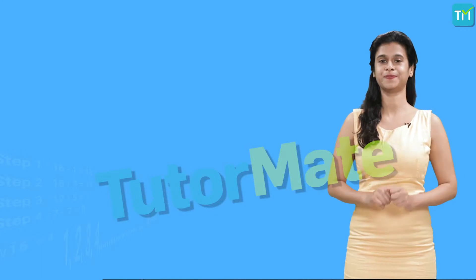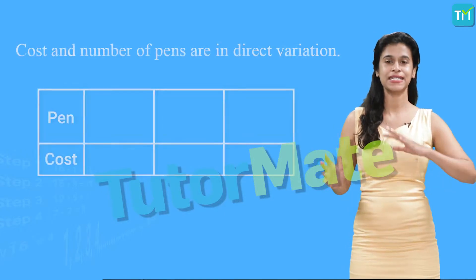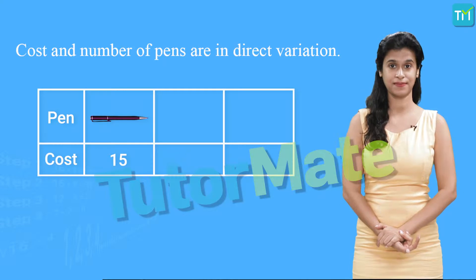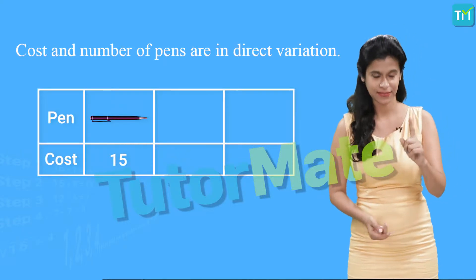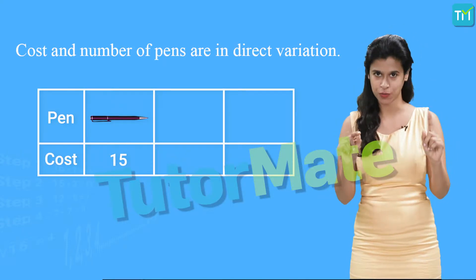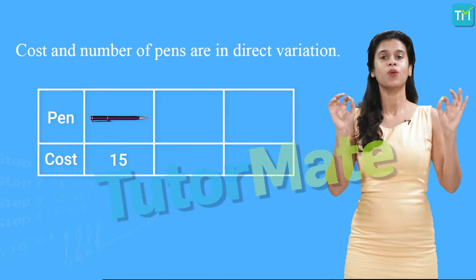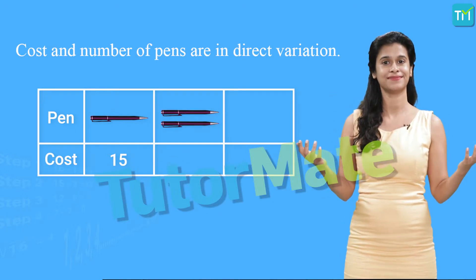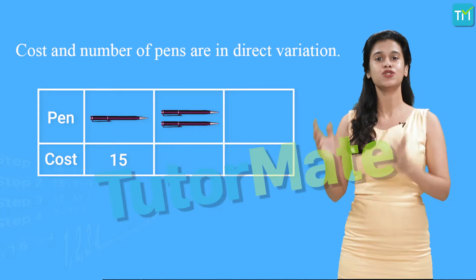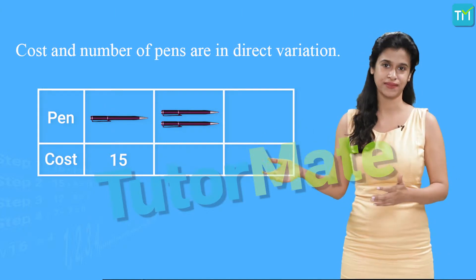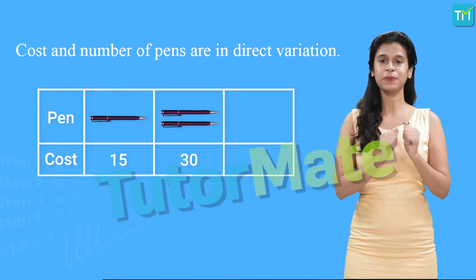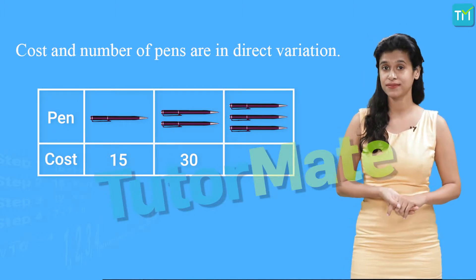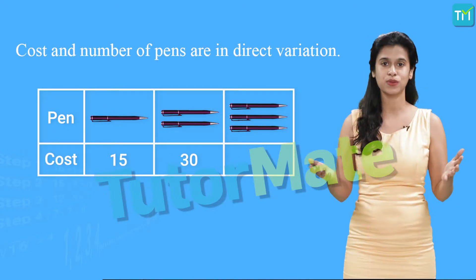Let me ask you a question. Say the cost of 1 pen is 15 rupees. So what will be the cost of 2 pens? It would be 2 into 15, that is 30. Similarly, the cost of 3 pens would be 3 into 15, that is equal to 45 rupees.